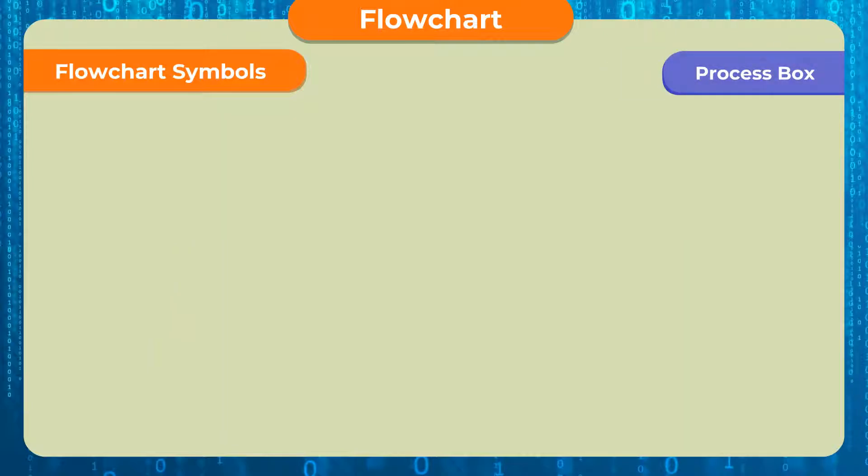Process box. The process box is rectangular in shape where all the steps involving processing work are written inside it. To calculate the numbers or to assign some values to variables, this process box is used. In one process box, only one step is written. So, you can use as many boxes one by one related to the number of processing steps to be taken.